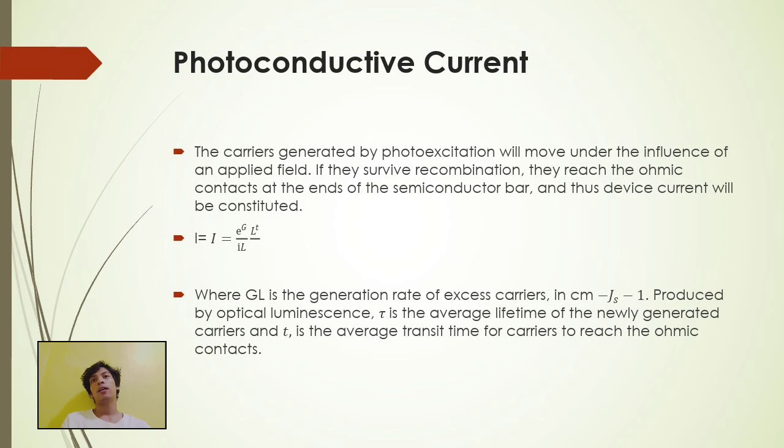Photoconductive current. Carriers generated by photo excitation will move under the influence of an applied field. If they survive recombination, they reach the ohmic contacts at the ends of the semiconductor bar, and thus device current will be constituted. I is equal to Egl over l_t. Where gl is the generation rate of excess carrier.